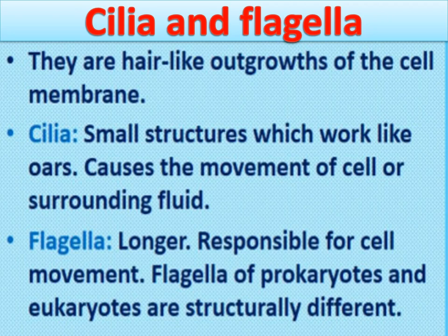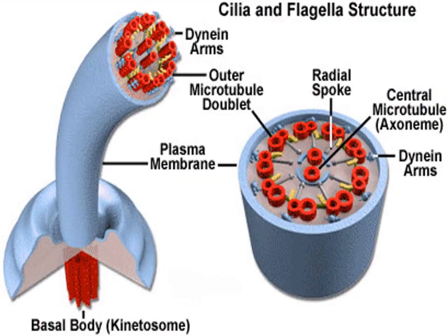Flagella are longer and are responsible for cell movement. Flagella of prokaryotes and eukaryotes are structurally different. Looking at the structure with the diagram: cilia and flagella appear like a tube covered by the plasma membrane. In the core or center of this structure, many microtubules are present.